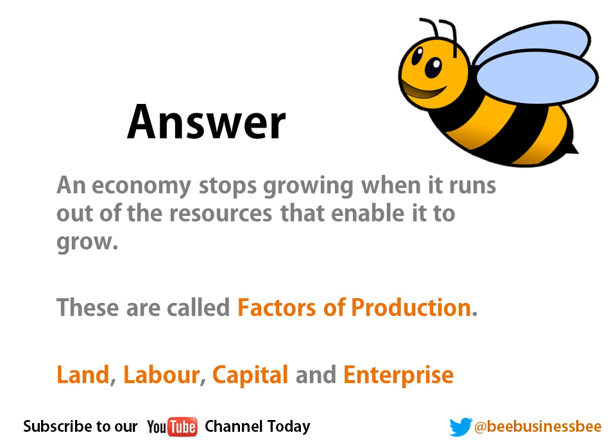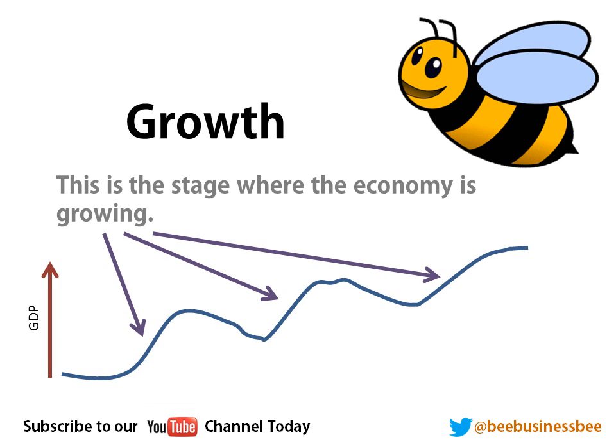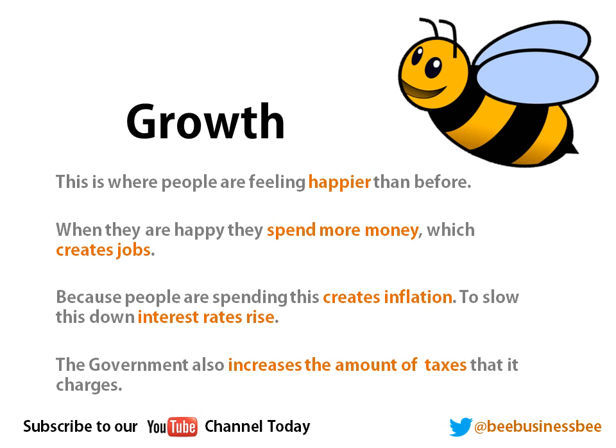That's why an economy doesn't continue to grow. The first stage is growth, clearly highlighted by the arrows here — this is where the economy is starting to increase in size. People are feeling happier, so they start to spend more money. They have more money because they've got jobs, and as they go out and spend, shops are more inclined to increase prices, which starts to increase inflation. To slow this down, the Bank of England starts to increase interest rates, giving more incentive to save. At the same time, anyone with a mortgage or loan will pay more, reducing their disposable income and slowing the ability to spend.